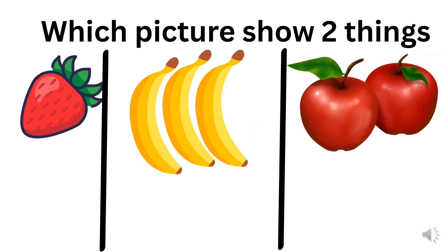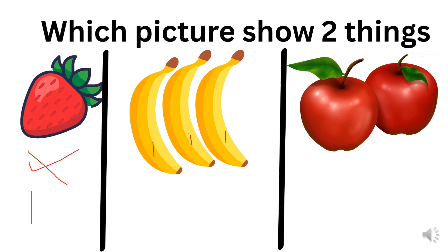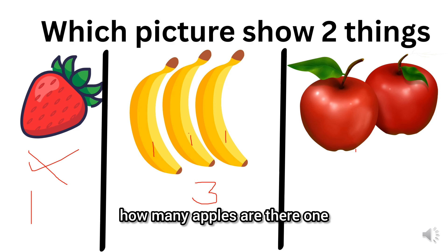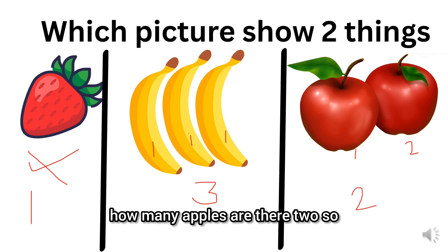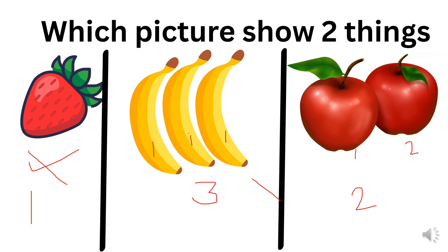Very good. Look at the picture and tell me, where is the two — two objects. Is this two? No, it's one. One strawberry. Is this two? Count with me: one, another one, two, and three. How many are there? Three. And now count: how many apples are there? One and two. How many apples? Two. So which is the picture showing two? Apple. The right answer is apple.